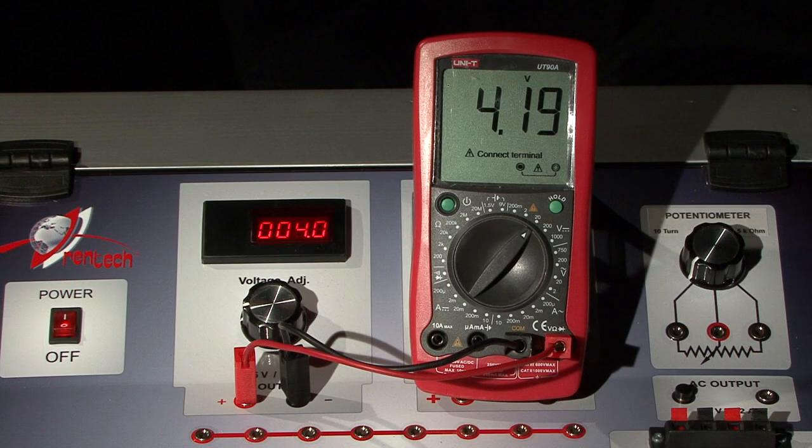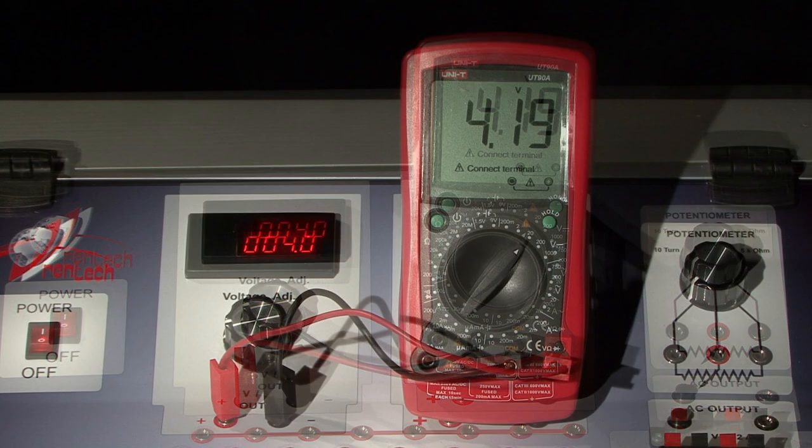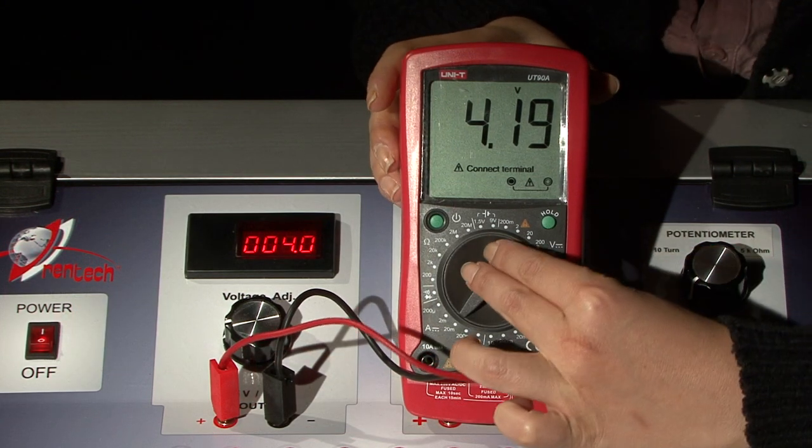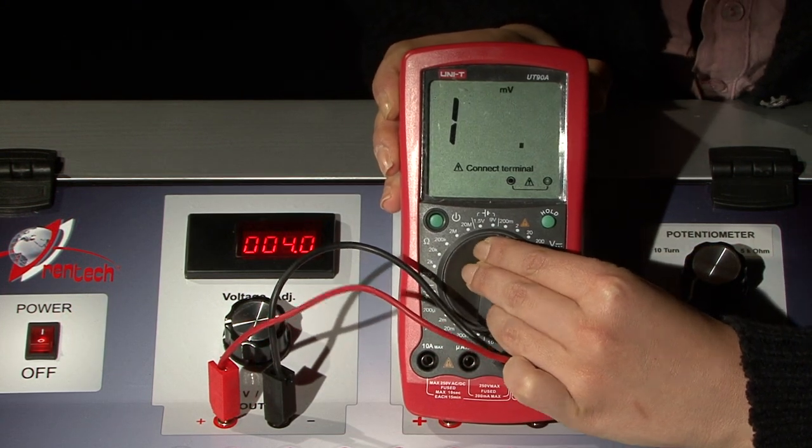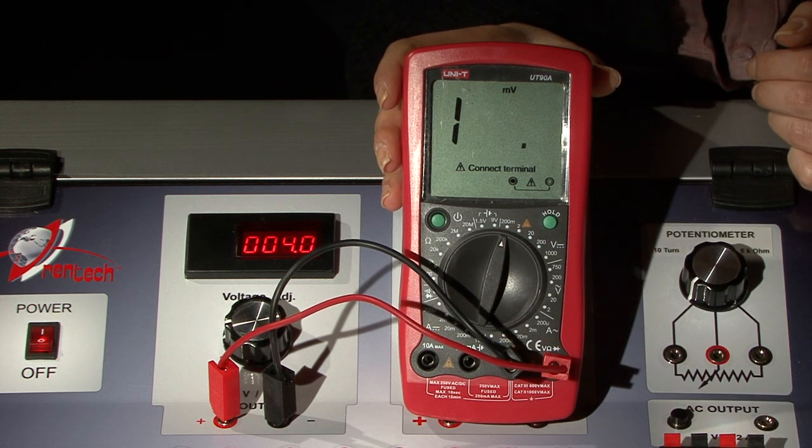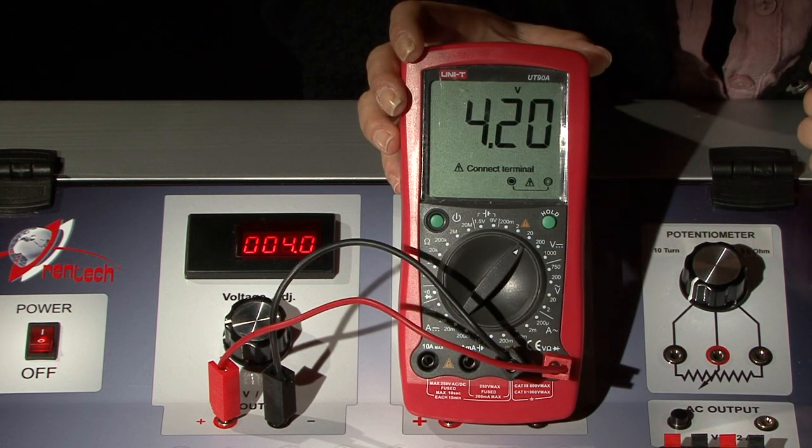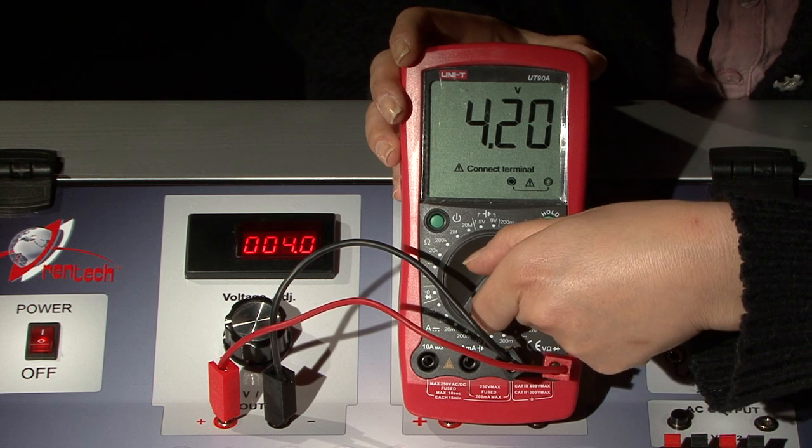Now let us make the same measurement in different ranges. We cannot measure the voltage in ranges lower than the power supply output. We observe decreasing precision as the range becomes larger.